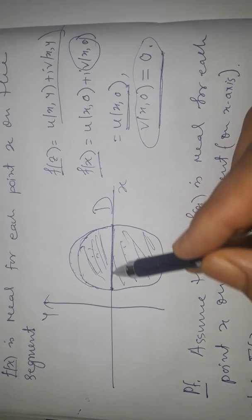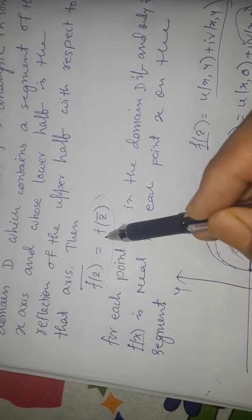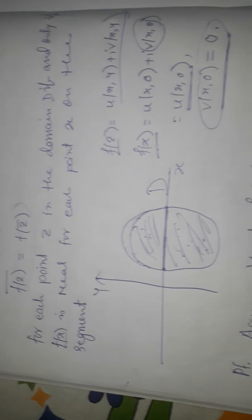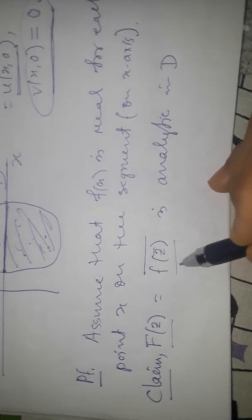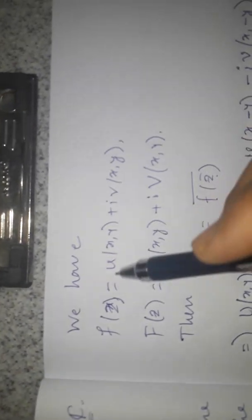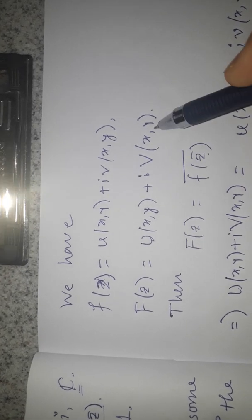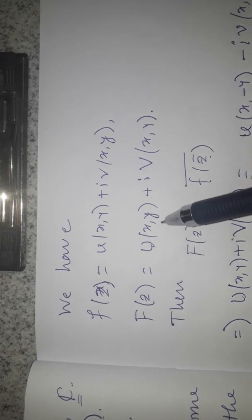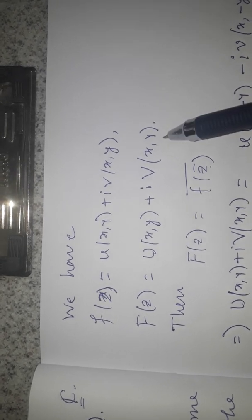To show this, we define capital F(z) as the conjugate of f(z-conjugate), and we claim that this function is analytic in D. We write f(z) = u + iv and capital F(z) = U + iV. We want to show capital F(z) is analytic in D, so we shall show that the first-order partial derivatives of U and V are continuous and satisfy the Cauchy-Riemann equations.